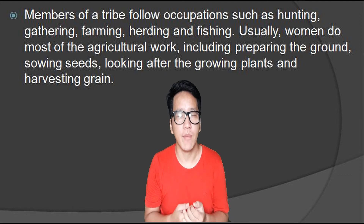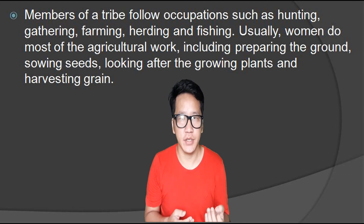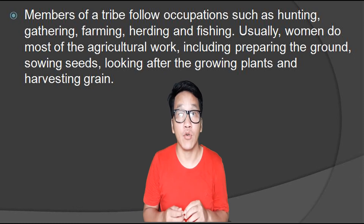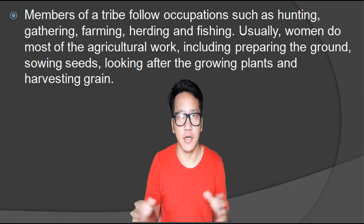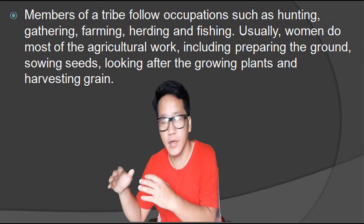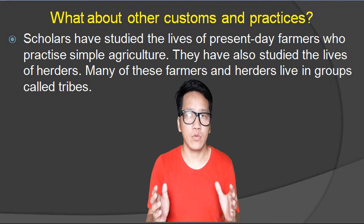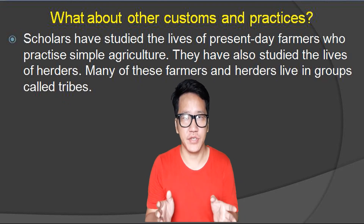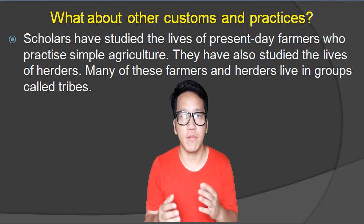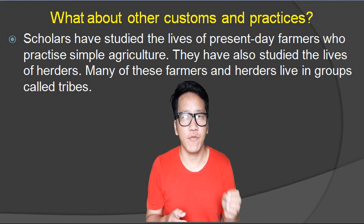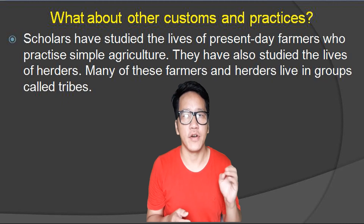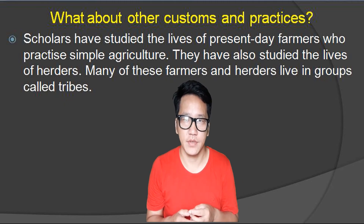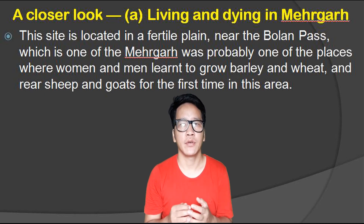Usually women do most of the agricultural work in the field, including preparing the ground, sowing the seeds, looking after the growing plants and harvesting grain — that means collecting the food grains from the agricultural field. Scholars have studied the lives of present-day farmers who practice simple agriculture. They have also studied the lives of herders. Many of these farmers and herders live in groups called tribes.